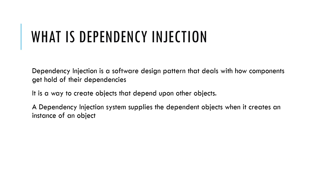What is dependency injection? Dependency injection, or DI, is a software design pattern that deals with how components get hold of their dependencies. It is a way to create objects that depend upon other objects. The dependency injection system supplies the dependent object when it creates an instance of the object.